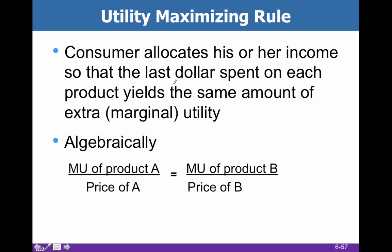Mathematically, what we want to do is allocate our income so that the last dollar spent on each product yields the same amount of marginal utility. We don't just like things the same if their prices are different. So if we stick to apples and oranges — maybe apples give us 5 points of utility and oranges give us 10 — but if apples cost $1 and oranges cost $5, then even though we prefer oranges, we're actually going to buy apples because our marginal utility per dollar is greater.